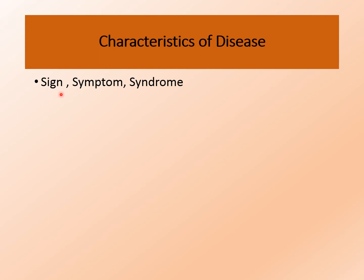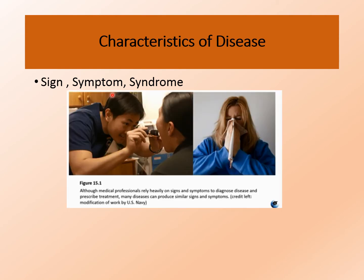Signs are the objective changes that a physician can observe and measure. They are objective and measurable, like blood pressure, temperature, and fever. However, there are some changes which are only experienced by the patient. These are highly subjective, like pain, dizziness, and nausea. All of them are not measurable and can only be explained by the patient — these are called symptoms.